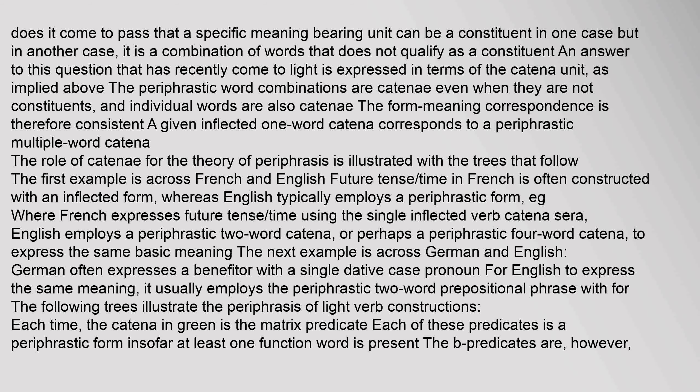The role of catenae for the theory of periphrasis is illustrated with tree diagrams. The first example is across French and English: future tense in French is often constructed with an inflected form, whereas English typically employs a periphrastic form. Where French expresses future tense using the single inflected verb catena 'sera', English employs a periphrastic two-word catena, or perhaps a periphrastic four-word catena, to express the same basic meaning. The next example is across German and English: German often expresses a benefiter with a single dative case pronoun, whereas English usually employs the periphrastic two-word prepositional phrase with 'for'.